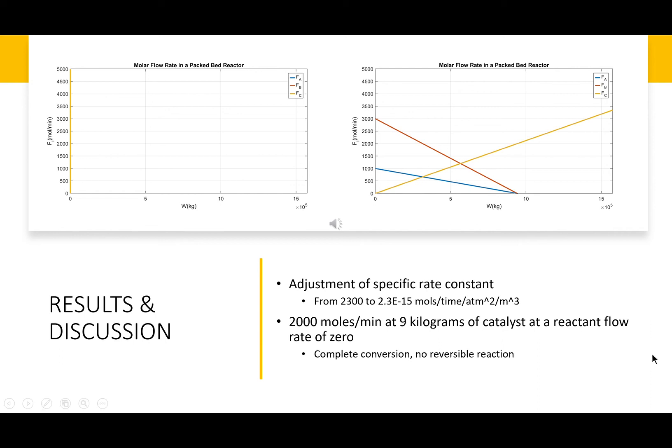The graph on the top right is after we had adjusted the specific rate constant to be many magnitudes smaller. However, when we adjusted the specific rate constant to be very small, you can see a more realistic, more what you would expect to see, the reactants going down to zero at about nine kilograms of catalyst, and ammonia, the product, going up to about 2000 moles per minute at that point, which would represent the complete conversion without taking into account the reversible reaction.